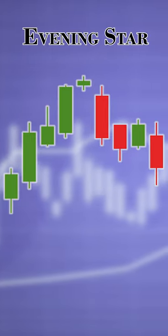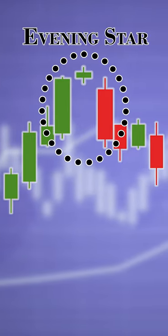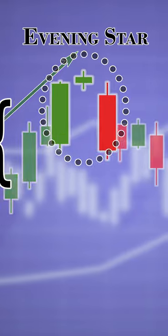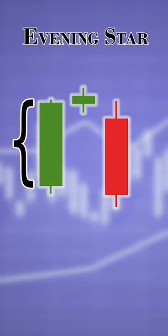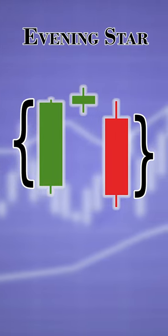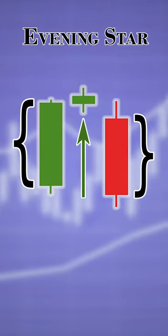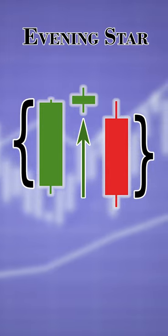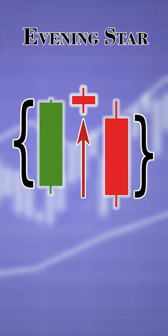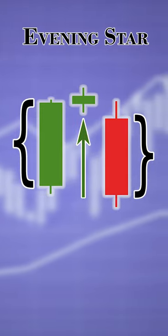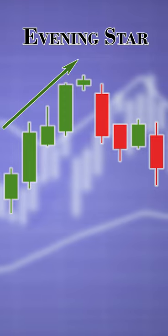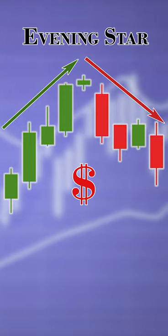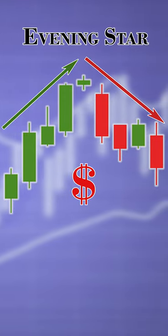On the bearish side, the evening star forms at the top of an uptrend, consisting of a long green and red candlestick on the sides surrounding a short-bodied one, which can be either red or green. The pattern shows signs of a possible bearish flip and the beginning of a downtrend.